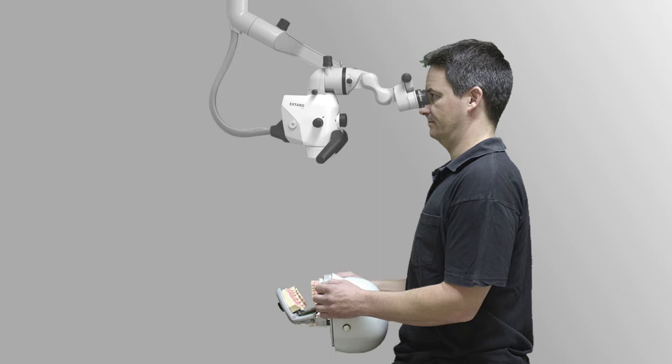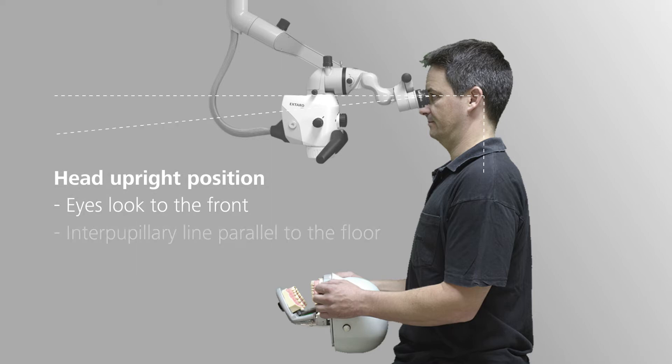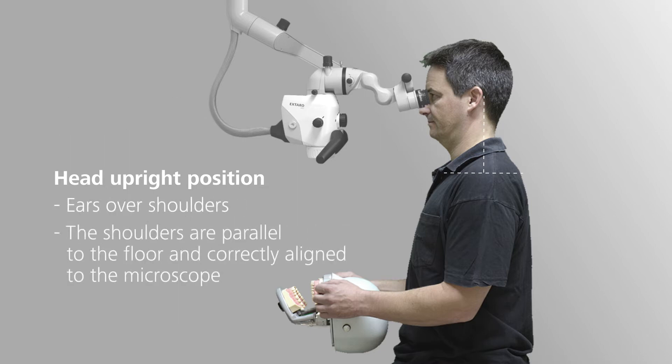Once the patient is in position, move the microscope in front of you and adjust the angle of the binocular tube without changing your natural body position. It should be easy for you to look straight ahead. Your interpupillary line should be parallel to the floor and your head should be in an upright position. Your shoulders should be parallel to the floor and correctly aligned with the microscope. Your ears should be roughly over your shoulders.